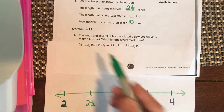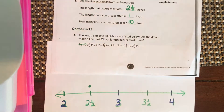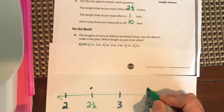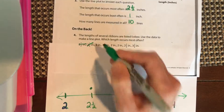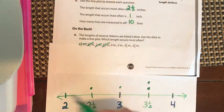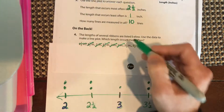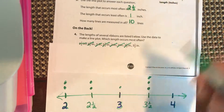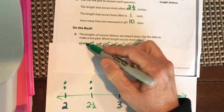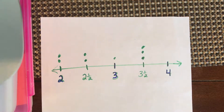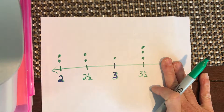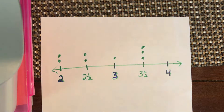Go through each ribbon length one by one: put a dot at two and a half and cross it out, put a dot at three and a half and cross it out, and so on. Your completed line plot should have eight total dots. Three and a half inches is the most popular length. If you didn't have four on your axis you might say three is least popular, but really four had no selections. Great job, have a good night!